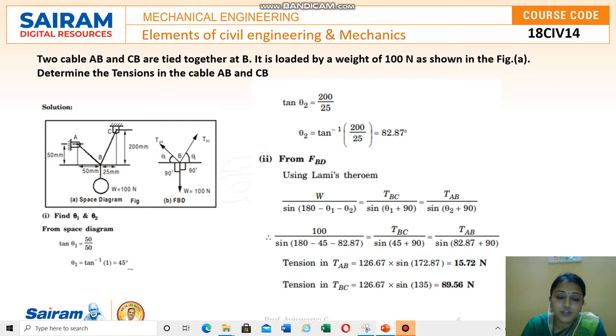Normally in Lami's theorem we will be having three force systems. Here in this numerical it is said that two cables AB and CB are tied together at B, loaded by a weight of 100 N as shown in the figure. Determine the tensions in the cable AB and CB.